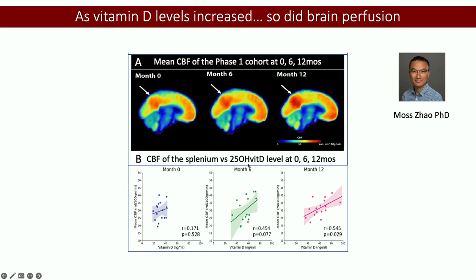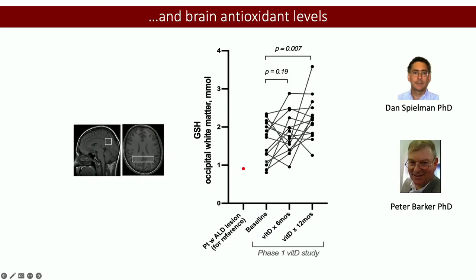We did increase cerebral blood flow, which we think is probably good, although it's not clearly caused by vitamin D — though we did find a correlation with dose. This area of the brain is harder to perfuse, and there is some evidence from Dr. Eichler or Dr. Massolino that diminished or irregular blood flow may lead to early lesions. So we think increased blood flow could be good. We also looked at antioxidant levels in the brain.